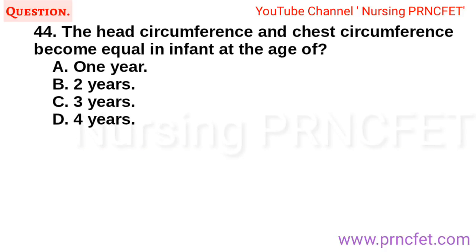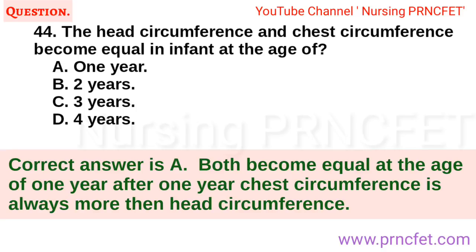Question 44: The head circumference and chest circumference become equal in an infant at the age of: A. One year. B. Two years. C. Three years. D. Four years. Correct answer is A. Both become equal at the age of one year. After one year, chest circumference is always more than head circumference.